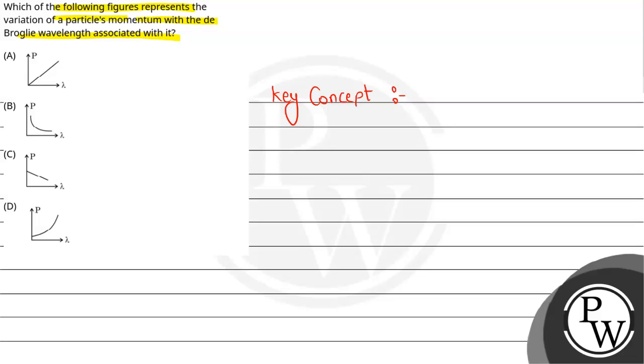The key concept for this question is the equation of de Broglie's wavelength. What is the equation of de Broglie's wavelength? Here we have lambda equals h by p, where lambda is the wavelength.